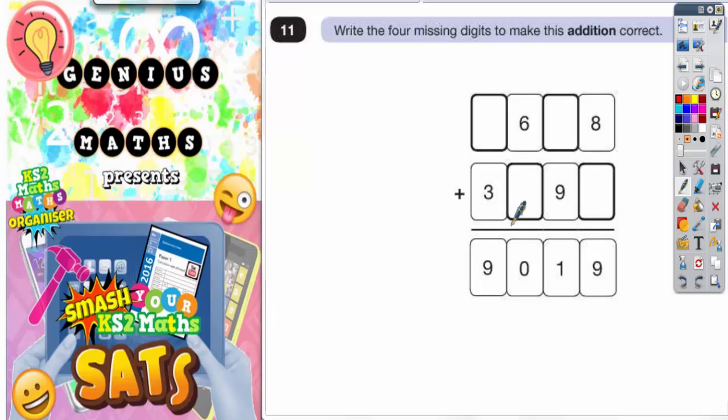Question 11. Write the four missing digits to make this addition correct. Now the unusual thing here is we're actually given the final answer because we're adding this top row to this second row to get this answer at the bottom here.